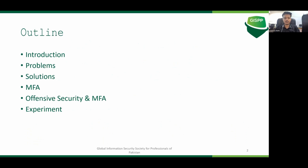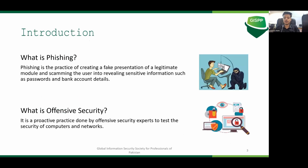This is the outline of my presentation. First I would like to give you the introduction, then we will discuss problems, their solutions, MFA, and then the use of MFA in offensive security. For those who don't know phishing — phishing is actually creating a fake presentation of a legitimate module and scamming the user to steal sensitive information such as bank account details. Mostly this practice is used by black hat hackers, but there are some white hat uses like red teamers. The second term is offensive security — it is a proactive practice done by offensive security experts or red teamers to test the security of computers and networks.